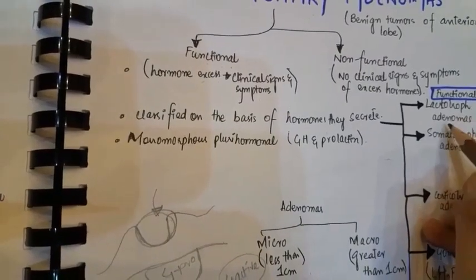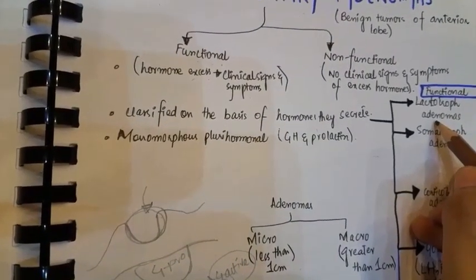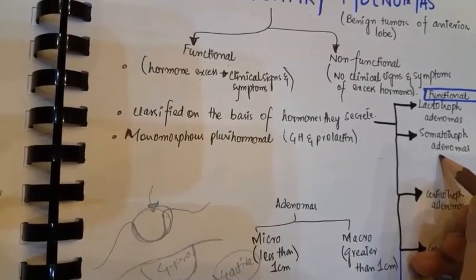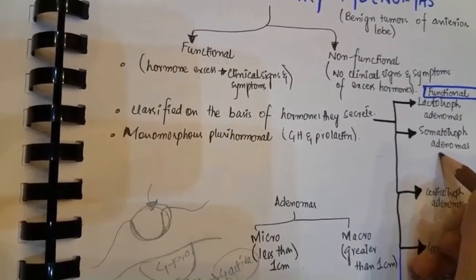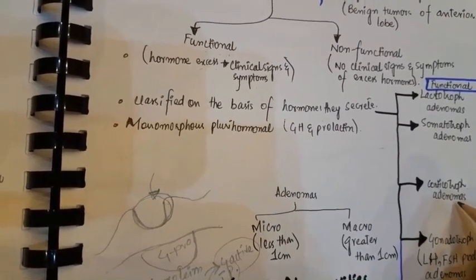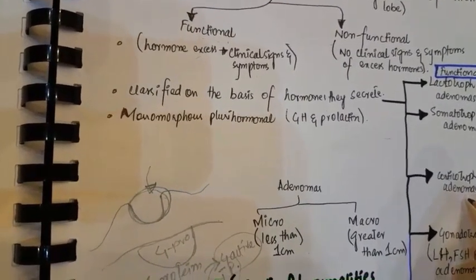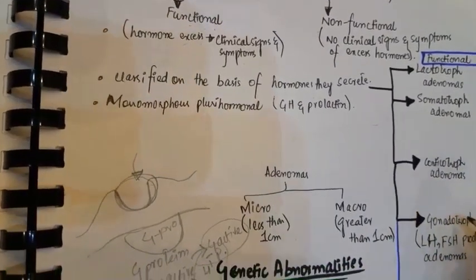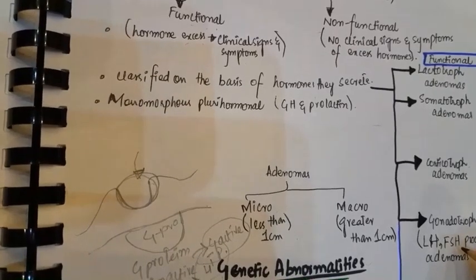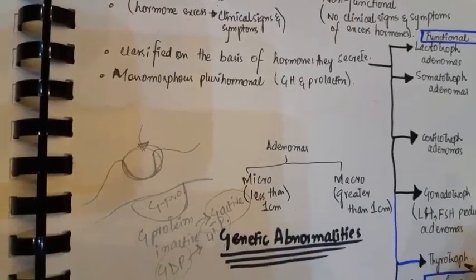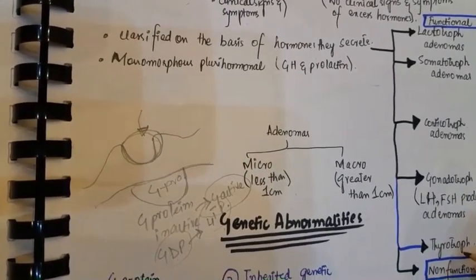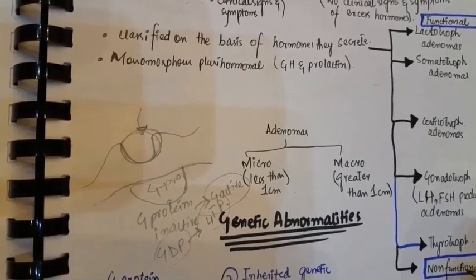Pituitary adenomas are classified on the basis of hormones they secrete. They can be lactotroph adenomas when they produce prolactin, somatotroph adenomas when they produce growth hormone, corticotroph adenomas when they produce ACTH, gonadotroph adenomas when they produce LH and FSH, and thyrotroph adenomas when they produce TSH.